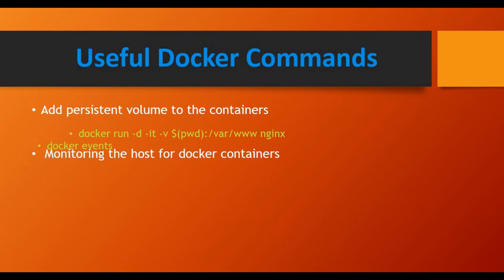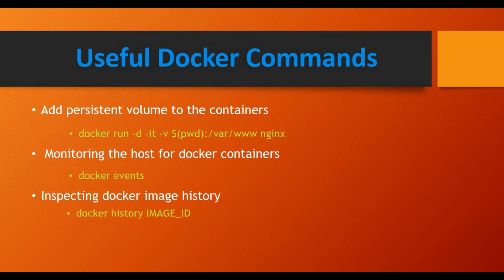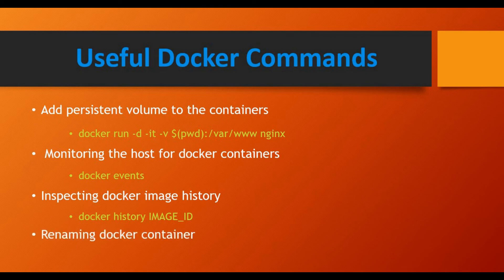To monitor Docker host events, use docker events — it gives you logs whenever containers are created or other events occur. To inspect an image's build history, use docker history <image_id>, which shows all the layers and commands used to create the image. Be careful: if you embedded usernames or passwords in a Dockerfile, docker history can reveal all the commands run to build the image.